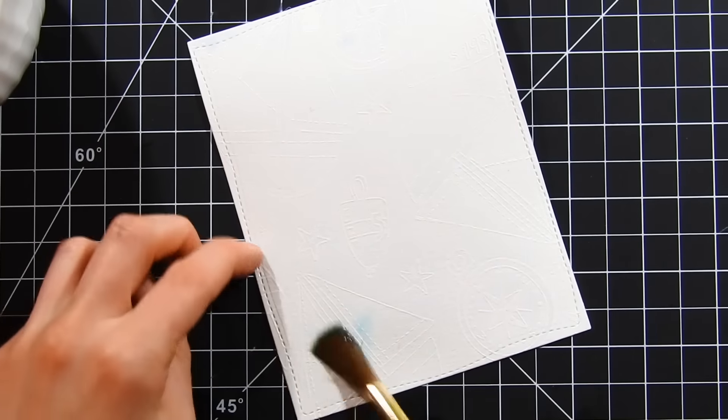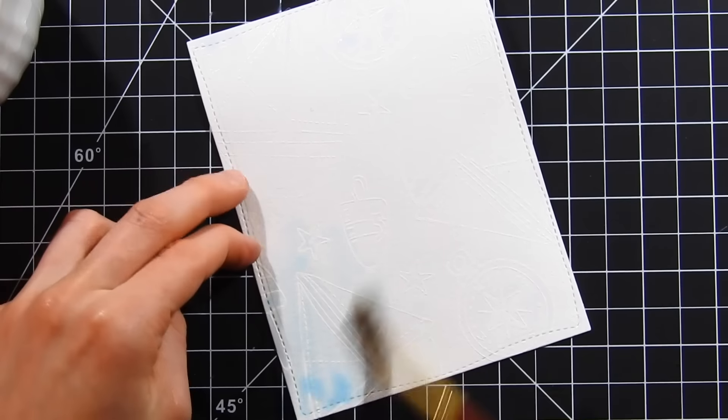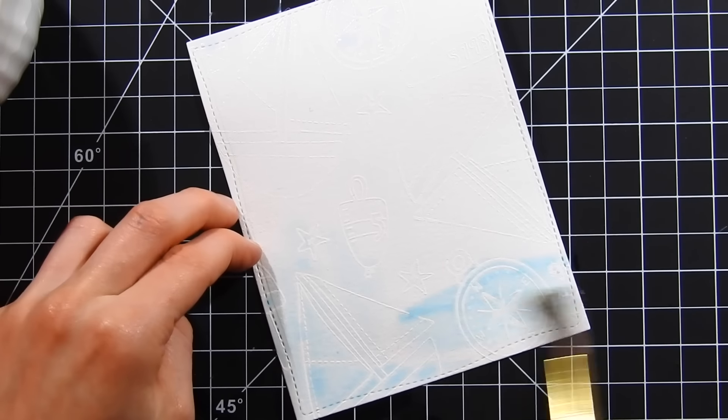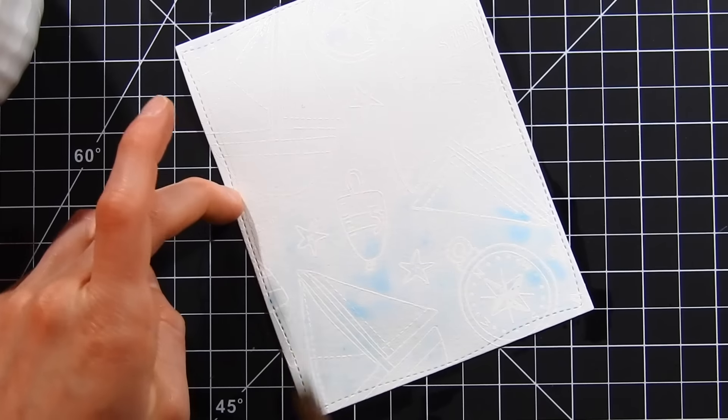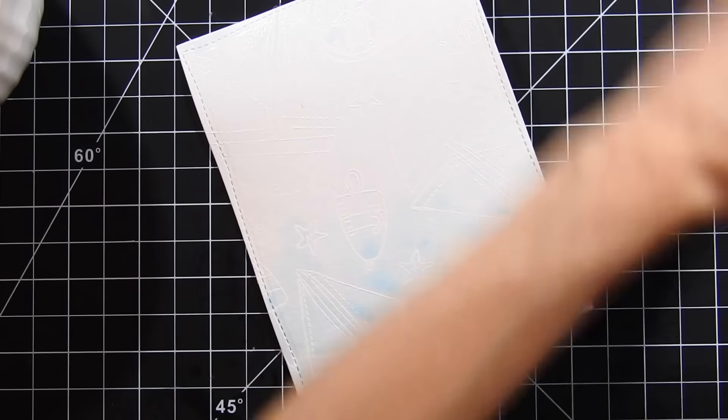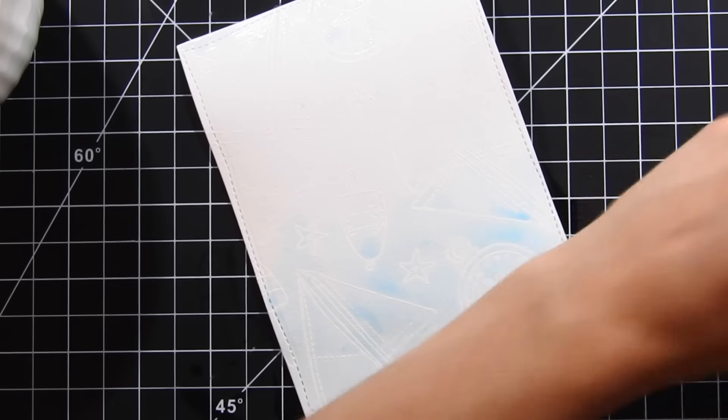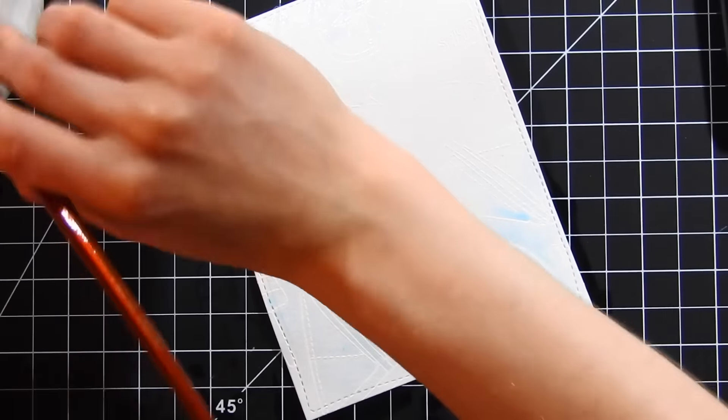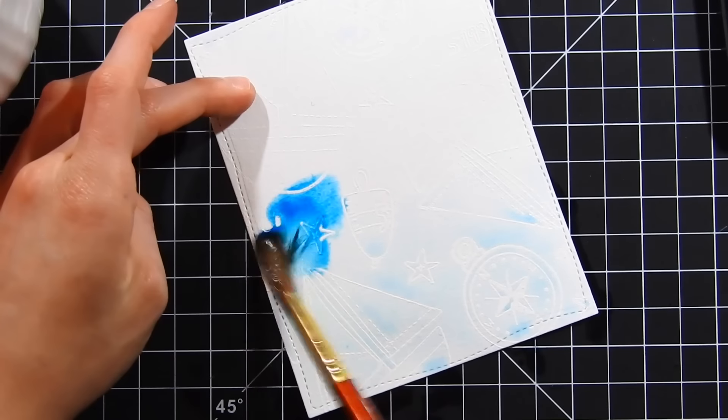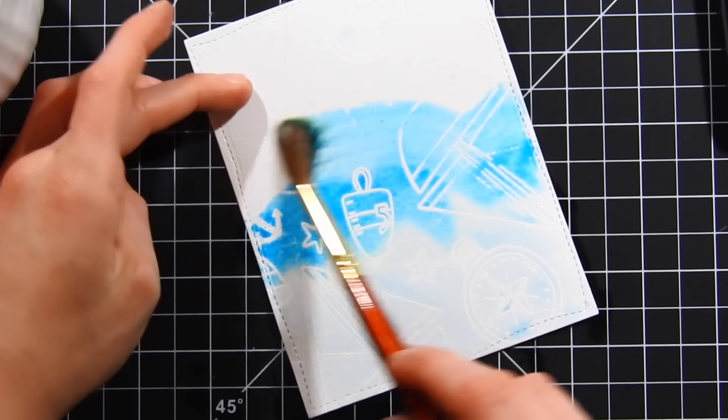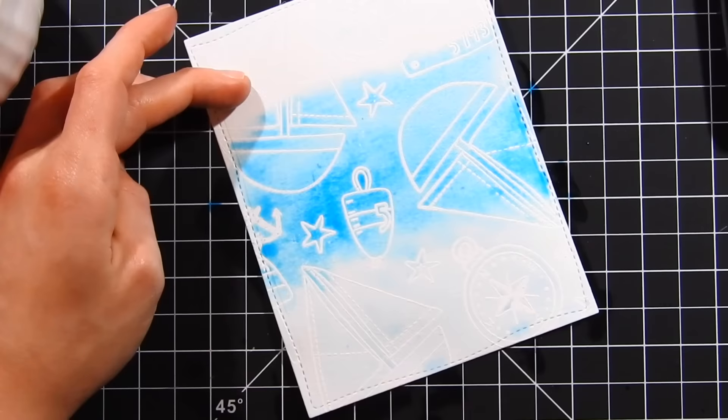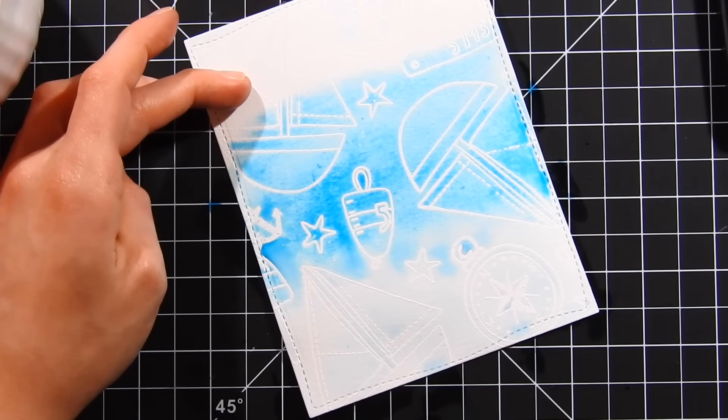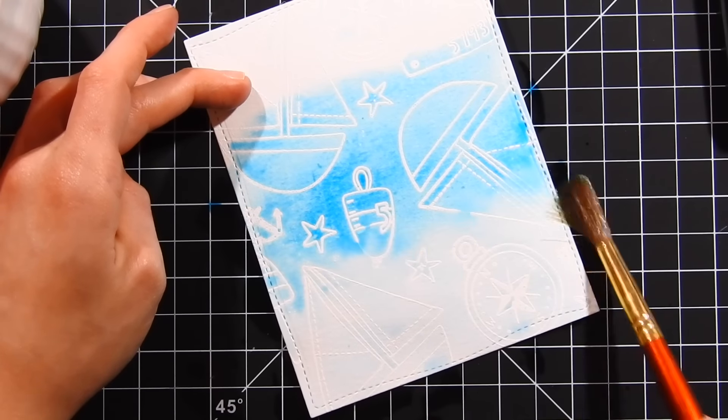So to get started, I'm going to start my ombre by adding some Tumbled Glass along the bottom portion of this card. After I've applied a little bit of Tumbled Glass, I'm going to grab some Mermaid Lagoon and add this to the middle portion of my card. Because we're doing an ombre and I've got three different colors, I want to make sure I break up the paper accordingly so that the ombre is evenly spaced along this entire card.